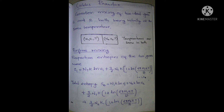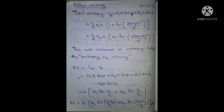For systems 1 and 2, before mixing the entropy SA equals: n₁k log V₁ plus n₂k log V₂ plus (3/2)n₁k times [1 plus log(2πm₁kT / h²)] plus (3/2)n₂k times [1 plus log(2πm₂kT / h²)]. After mixing, the two volumes combine so V = V₁ + V₂.